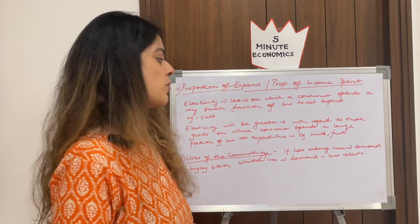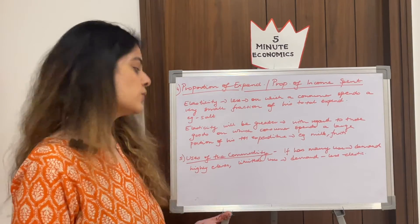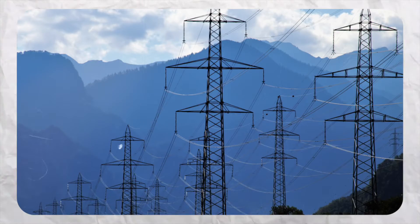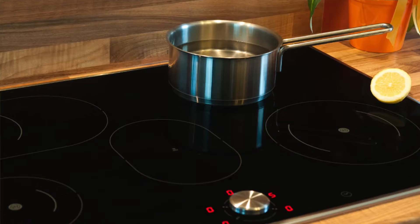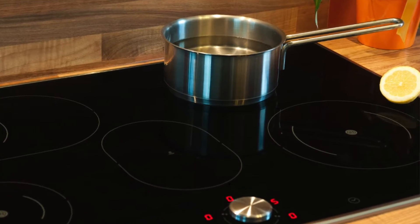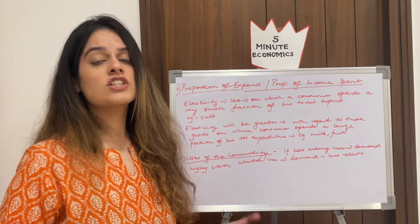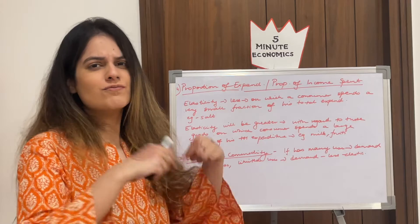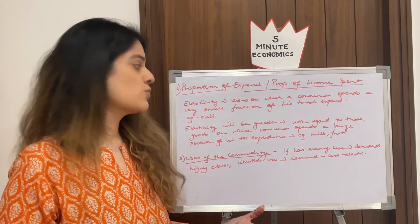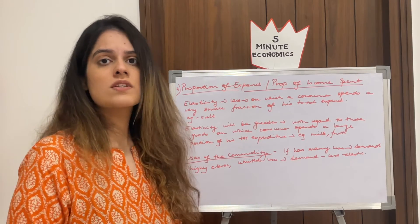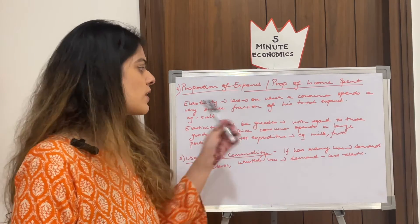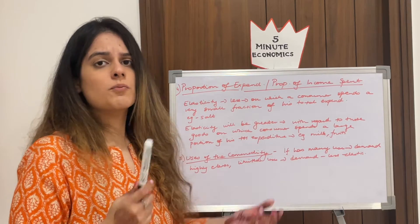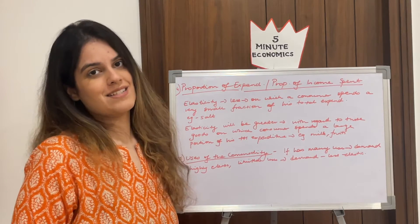Next is uses of the commodity. If something has several uses, demand is highly elastic — for example, electricity is used for heating, cooking, and lighting, so demand changes considerably. Whereas something with only one or two uses, like a whiteboard marker used only to write on the whiteboard, has inelastic demand regardless of price changes.